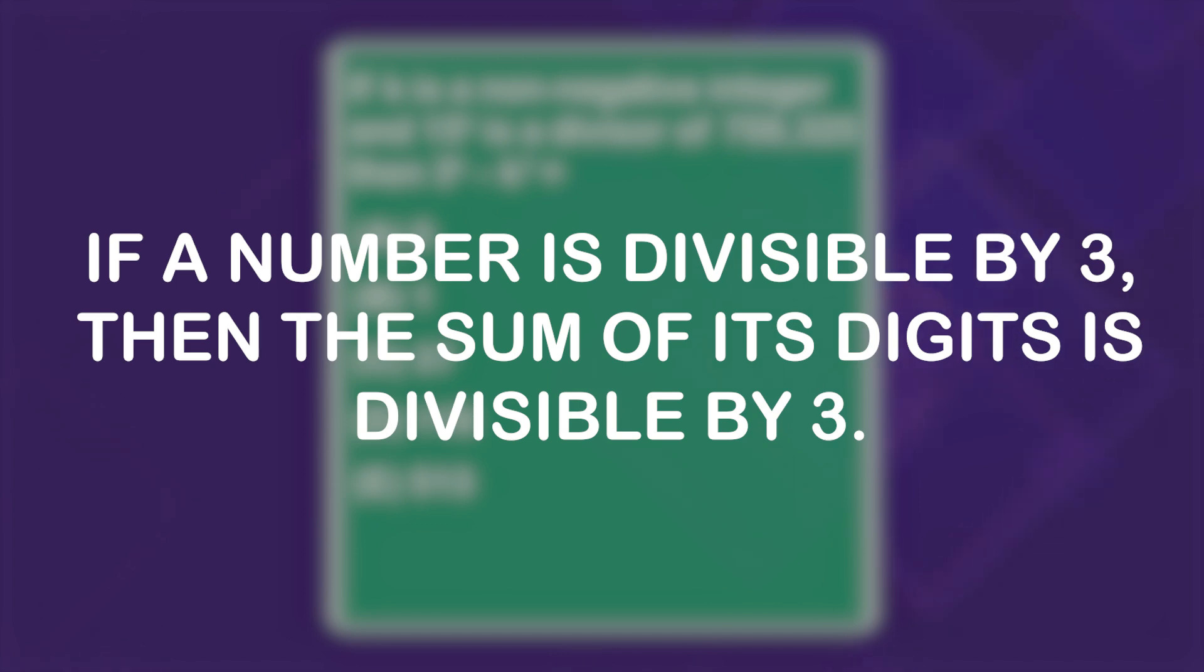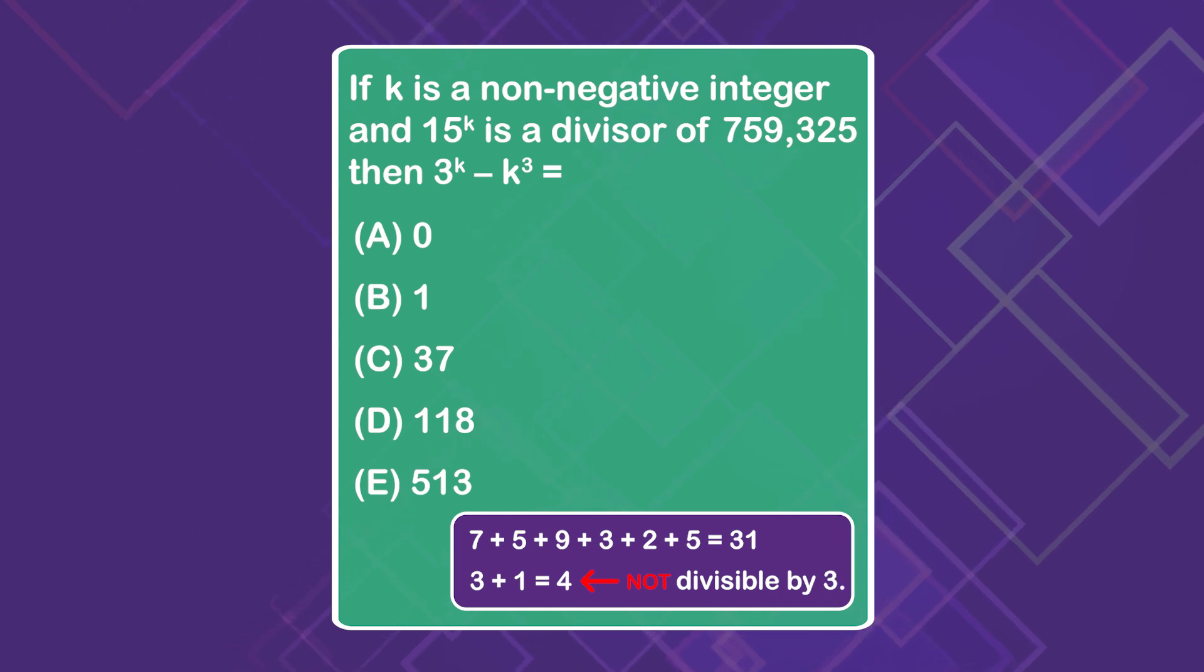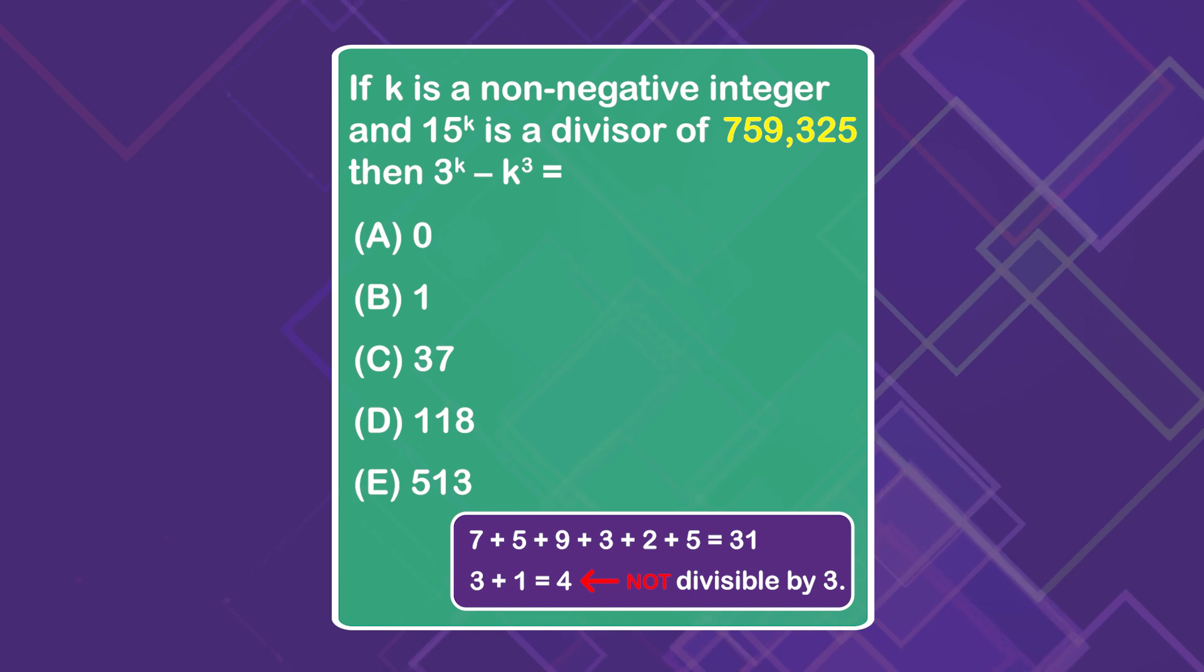That means we actually add up all of its digits: 7 plus 5 plus 9 plus 3 plus 2 plus 5. That's going to equal 31. Maybe you can tell whether that's divisible by 3 or not. If not, we can repeat the process and add those digits together: 3 plus 1 equals 4. Clearly this is not divisible by 3. That means that our big number is not divisible by 15.